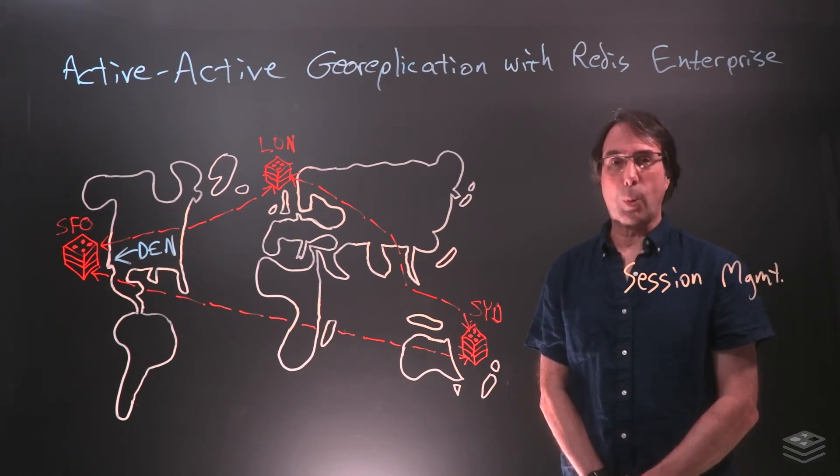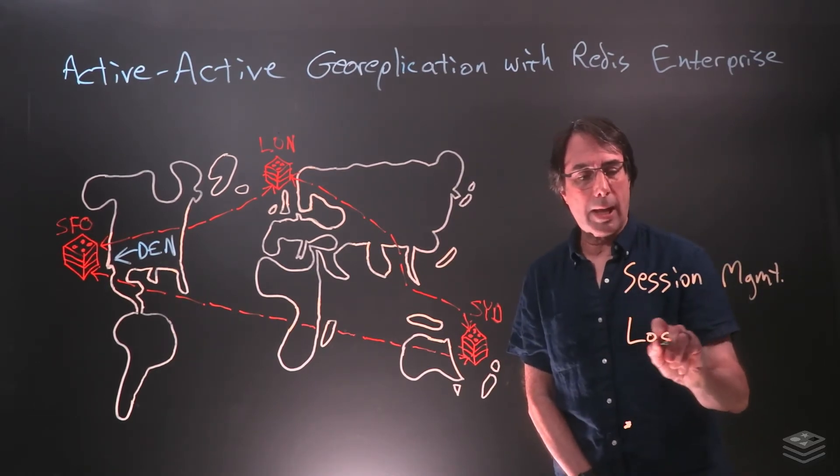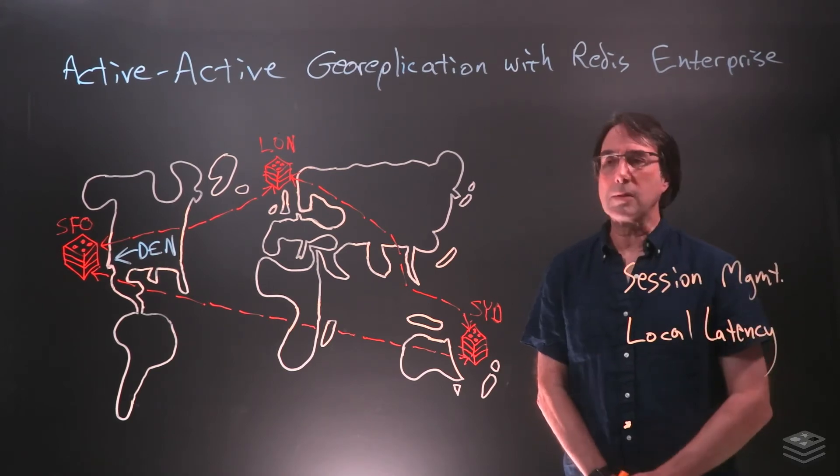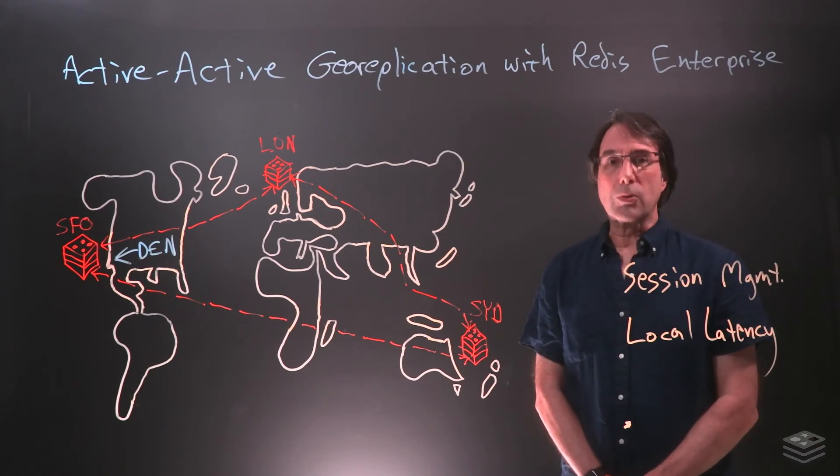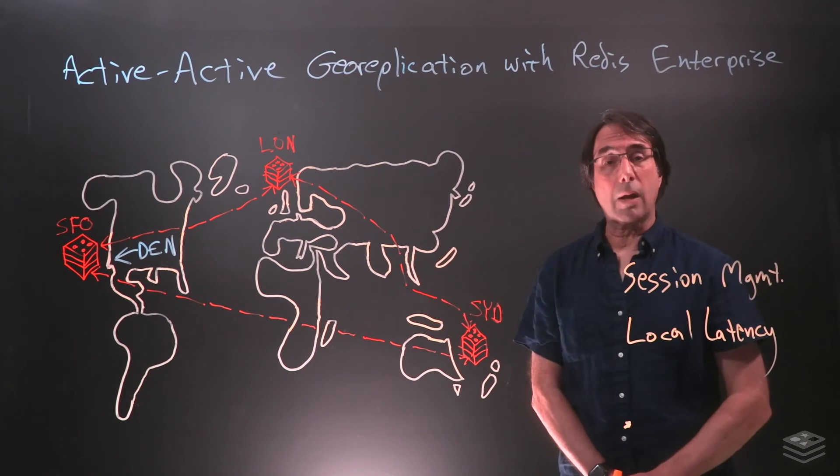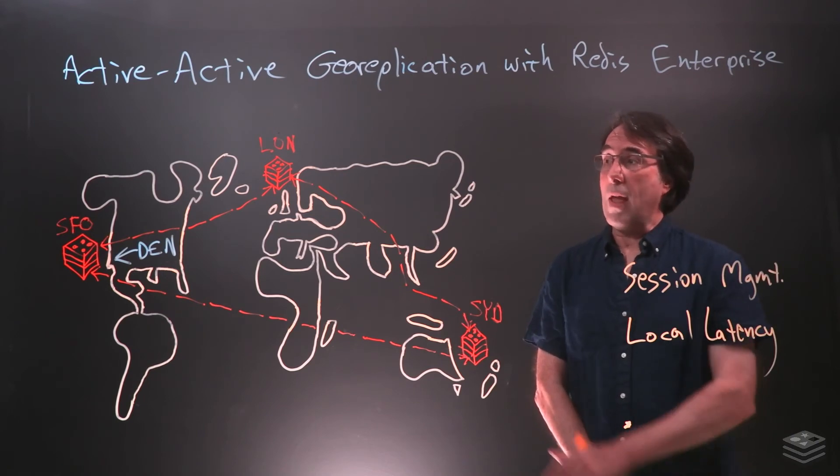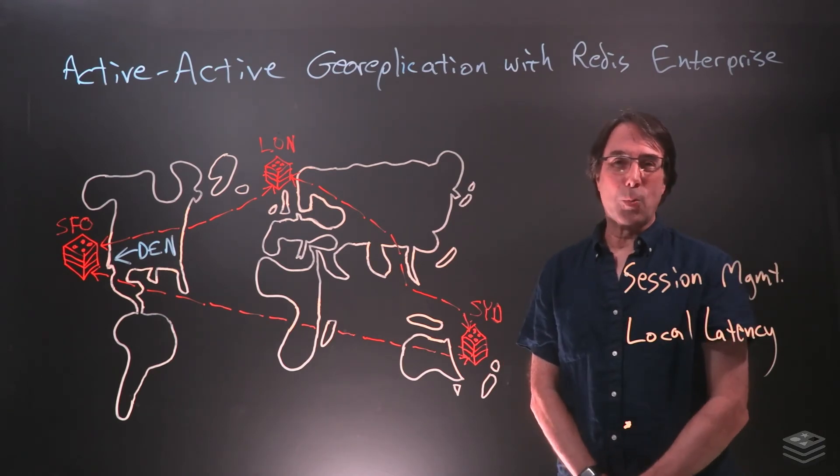And what we mean by local latency is that users around the world can each use the replica that's closest to wherever they happen to be. That gives each user great performance while we still get the benefits of ActiveActive. So let's say we're running an online game and we have a player in Seattle, one in Madrid, and we have my daughter who lives in Wellington.